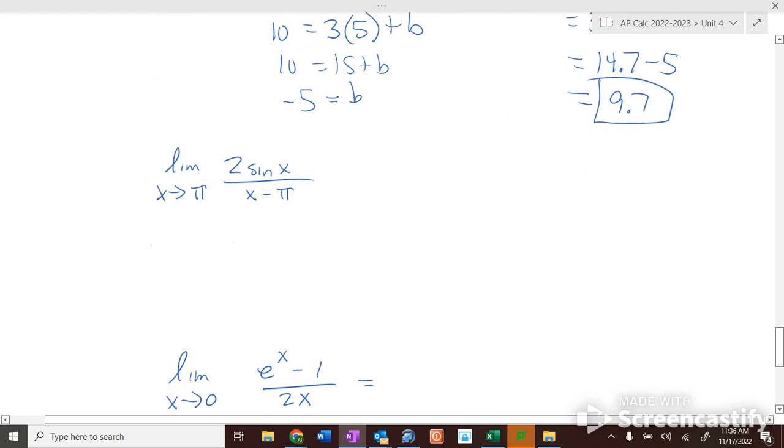If I stick in pi right now I get 0 over 0, because the sine of pi is 0, 2 times 0 is 0, pi minus pi is 0. So 0 over 0, so what should I do in this case? Take the derivative of top and bottom. What's the derivative of 2 sine of x? 2 cosine of x. What's the derivative of x minus pi? 1. What's the cosine of pi? Negative 1, so it's 2 times negative 1 divided by 1, which is negative 2.